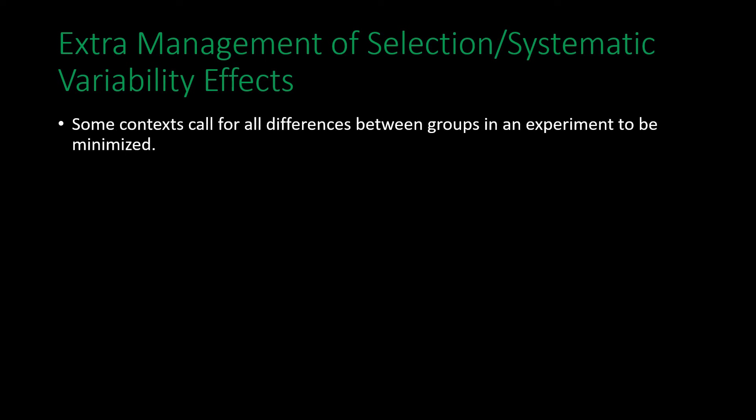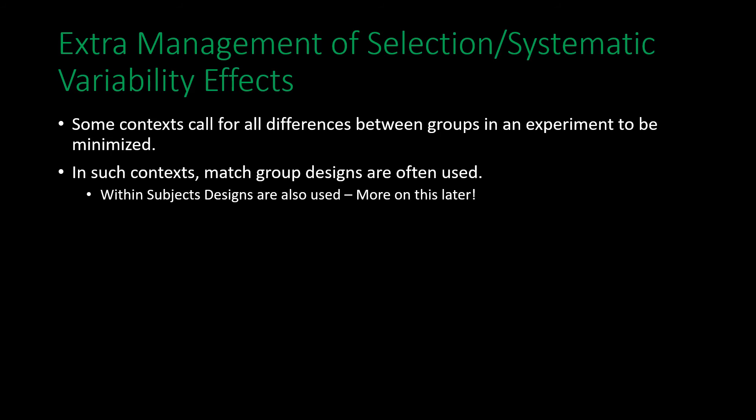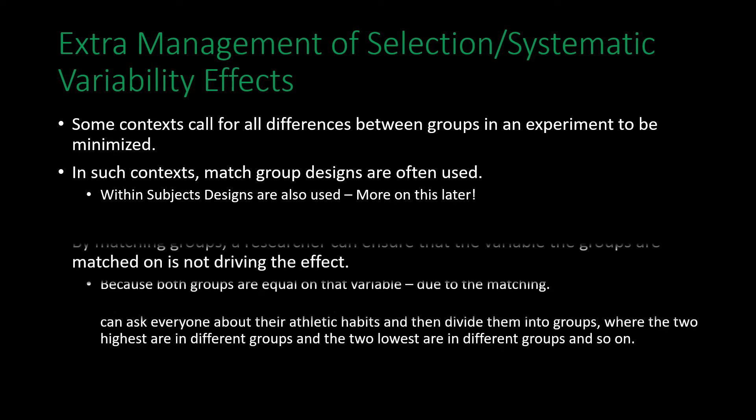Some contexts call for minimizing all differences between groups in an experiment, and in such contexts we tend to use matched group designs. For example, if height is something we are trying to control for, we measure everyone's height, take the two tallest people and put one into each group, take the next two tallest and split them the same way, continuing down to the two shortest people. This gives us two groups that are roughly equivalent in their distribution of tall, medium, and short people, rigorously controlling for that external variable.